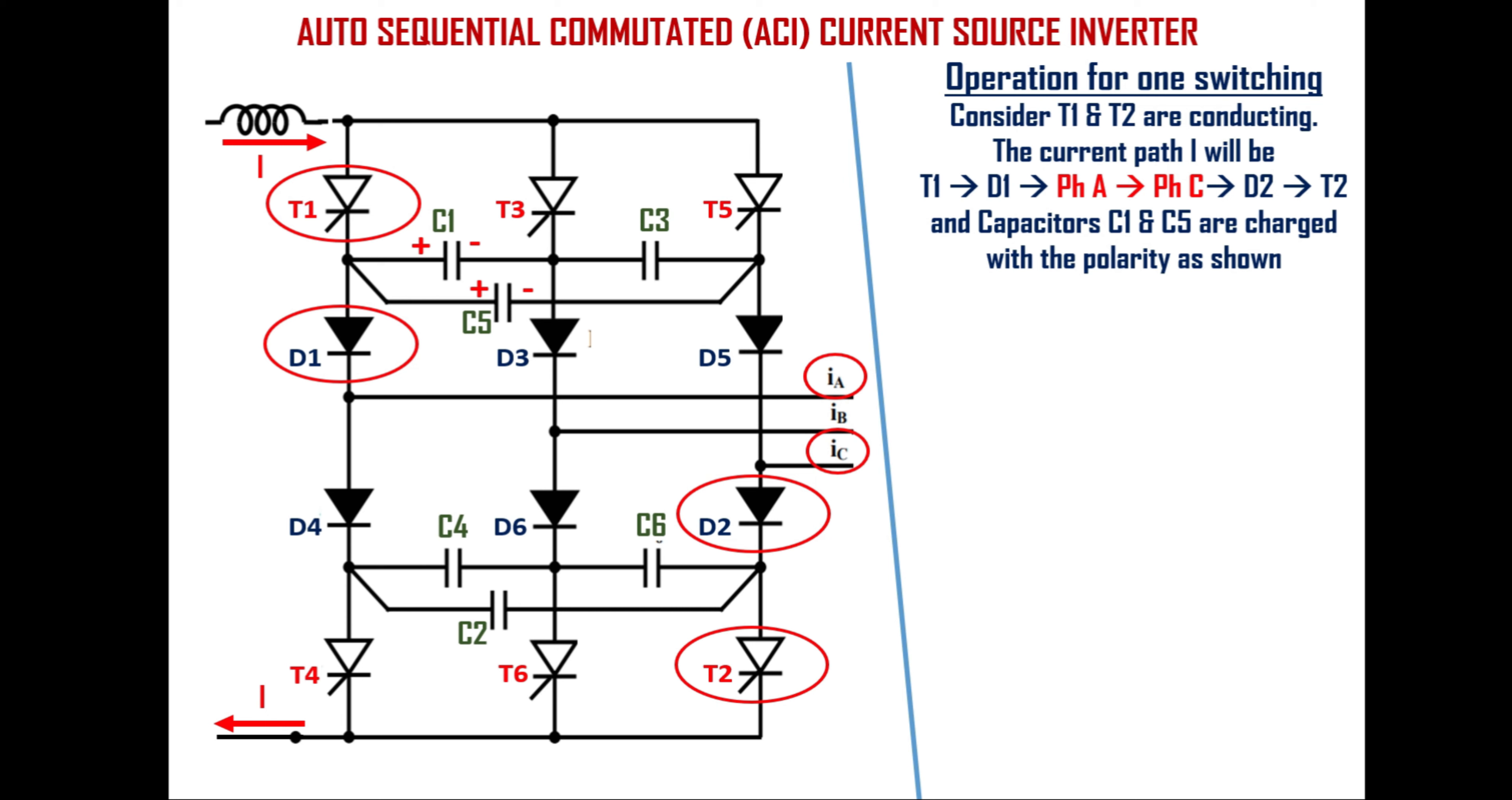Capacitors C1 and C5 will now charge with the polarity as shown. When thyristor T3 turned on then full voltage of capacitor C1 is applied to reverse bias the thyristor T1 through T3 and hence thyristor T1 turned off. Reverse biasing means negative potential to anode and positive potential to cathode of thyristor.